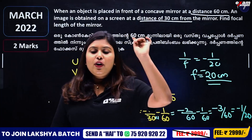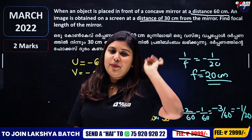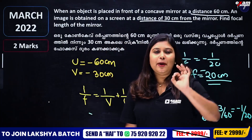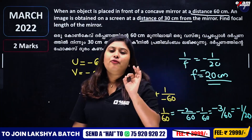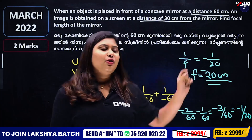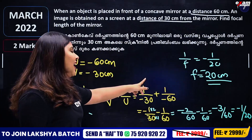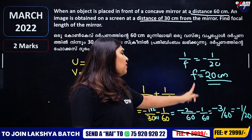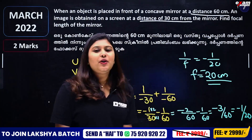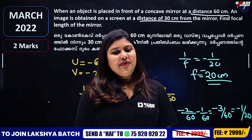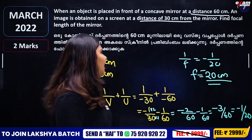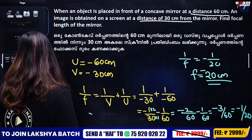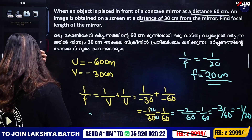We will do a concave pattern. Focal length is equal to minus 20 cm — that is the correct answer. Two marks are asked.